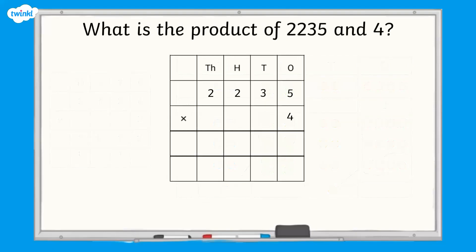Now have a try at this question without the counters if you can. What is the product of two thousand, two hundred and thirty-five and four? Remember, the product is the answer when two numbers are multiplied together.